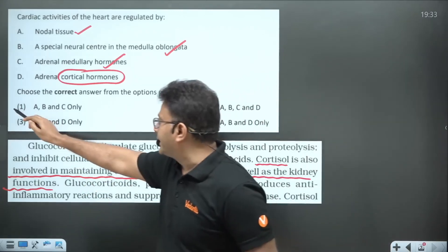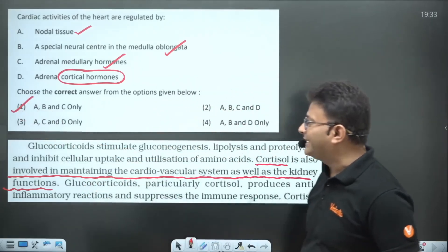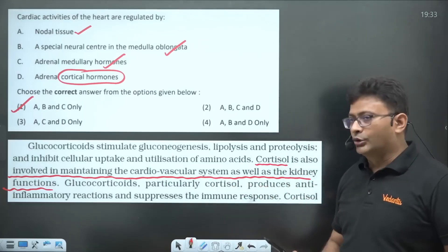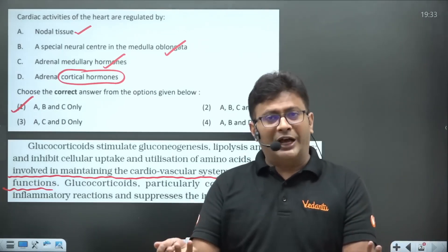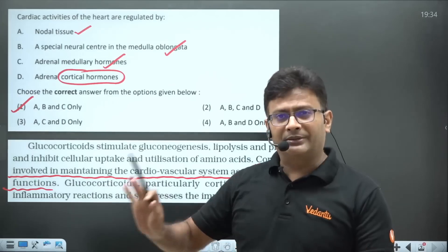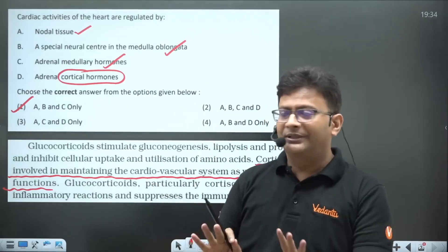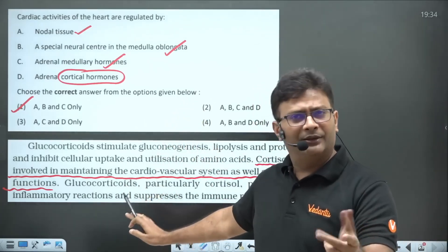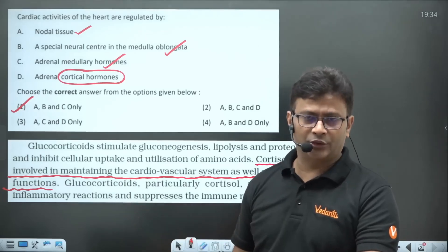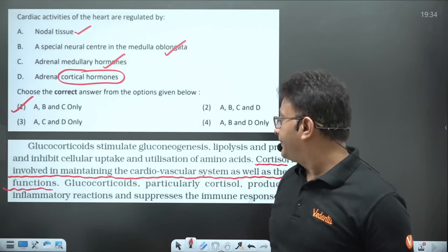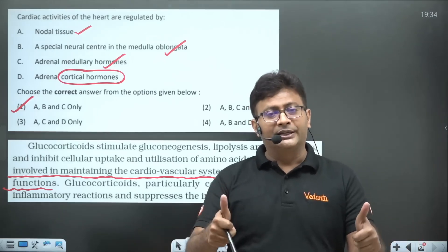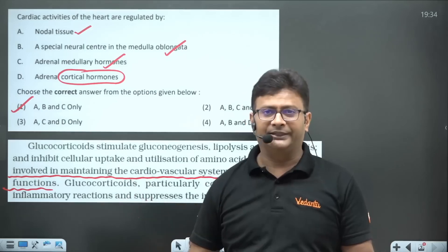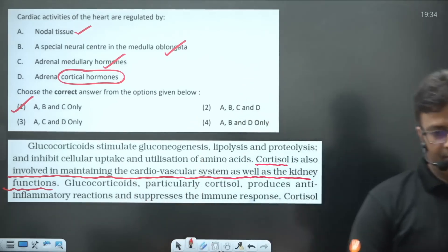The answer given by NTA is correct — options A, B, C — and most students have done this. The confusing line is causing doubt, but conceptually the claim cannot be made. However, the option is there if you want to challenge; there is a risk of 200 rupees. So those were the two questions — I've explained the concept according to NCERT. Thank you.